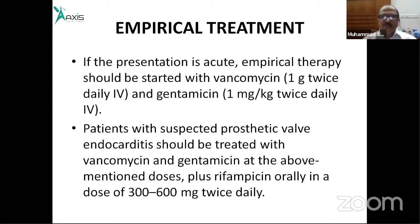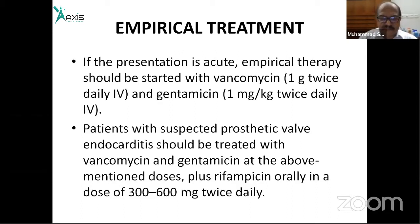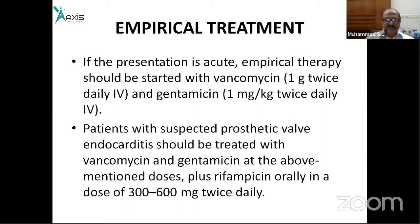Infective endocarditis requires a prolonged duration of antibiotic therapy — typically 4 to 6 weeks. Patients with suspected prosthetic valve endocarditis should be started on vancomycin and gentamicin at the above-mentioned doses, plus rifampicin orally at 300 to 600 mg twice daily. Rifampicin has a particular role in prosthetic valve endocarditis.